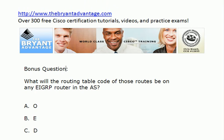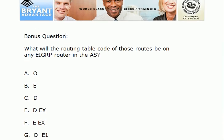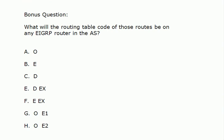Here's our 25-point bonus question — and if you get that reference, leave me a comment on YouTube. What will the routing table code of those redistributed routes be on any EIGRP router in the AS? What will that routing table code be?